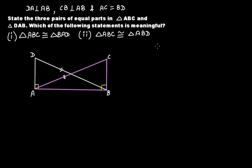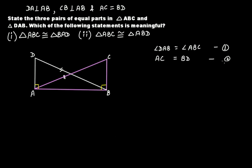The first pair: angle DAB in triangle DAB equals angle ABC in triangle ABC, because both angles are 90 degrees. The second pair: AC is the hypotenuse in triangle ABC and BD is the hypotenuse in triangle DAB — both are equal, so AC equals BD. The third pair: side AB, which is common to both triangles.